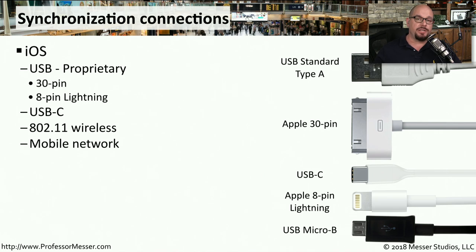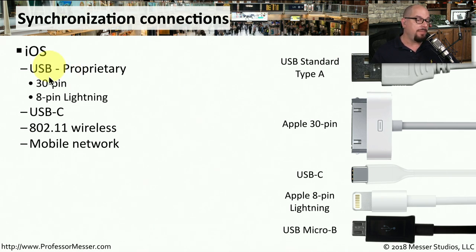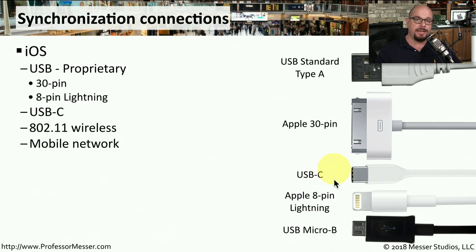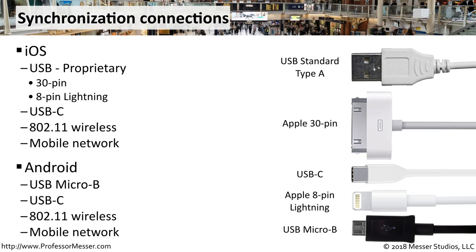To synchronize information on your mobile device, you either need to connect a cable or use a wireless network connection. Normally, you're plugging into a wired connection on your computer using a USB standard type A connection. If you have an iOS device, you may be able to connect with Apple's proprietary connectors. Older iOS devices use the Apple 30-pin connector, but newer iOS devices might use the Apple 8-pin Lightning connector or the more standardized USB-C connection. Most mobile devices can also communicate over 802.11 wireless networks, and if your device supports it, you can communicate over a cellular wireless network. On Android devices, you can synchronize over USB Micro-B or USB-C, or you can use your 802.11 wireless network or the network from your mobile provider.